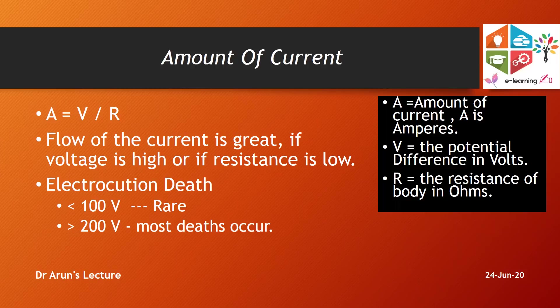The amount of current passing through the body is determined by the equation A = V/R, where A is amperes, V is voltage, and R is resistance. Amperes indicate the actual intensity or total amount of electricity passing through the body. Increased voltage increases ampere flow; decreased resistance also greatly increases current flow. Key numerical data: less than 100 volts — death is rare; greater than 200 volts — death is most likely.